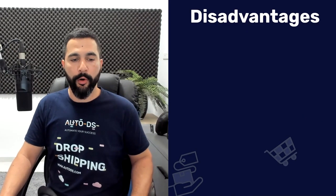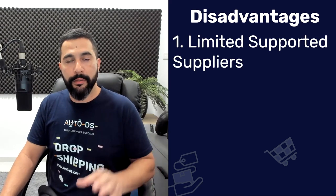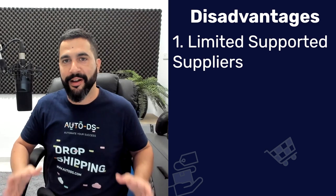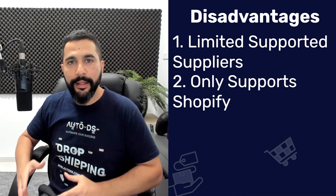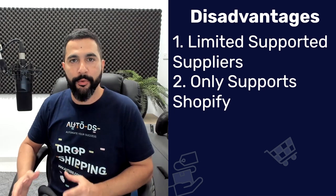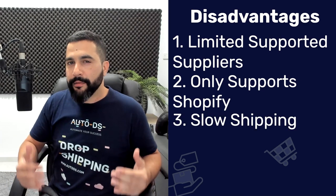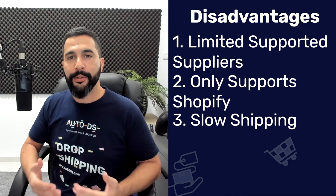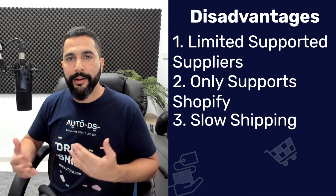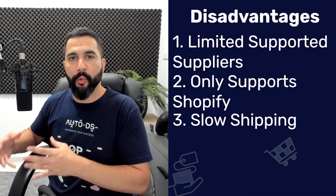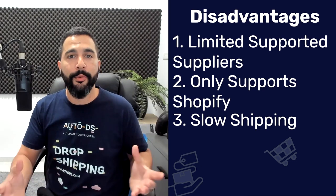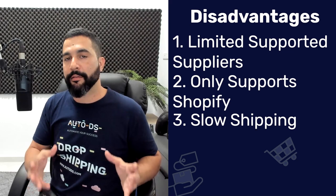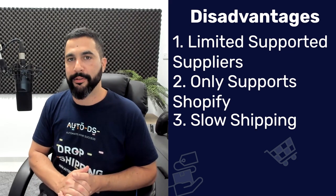Now let's talk about some of the cons when working with Oberlo. First, you have limited supported suppliers — in this case only one, which is AliExpress. The second disadvantage is that they work only with Shopify. Shopify is your selling channel, AliExpress is your supplier — that's where it starts and ends with Oberlo. Another disadvantage is relatively slow shipping times, because you're dropshipping from AliExpress and most products are sourced from China. When selling from China to the US, UK, Canada, or any other region around the world, you will notice relatively slow shipping times, which is not something buyers like.